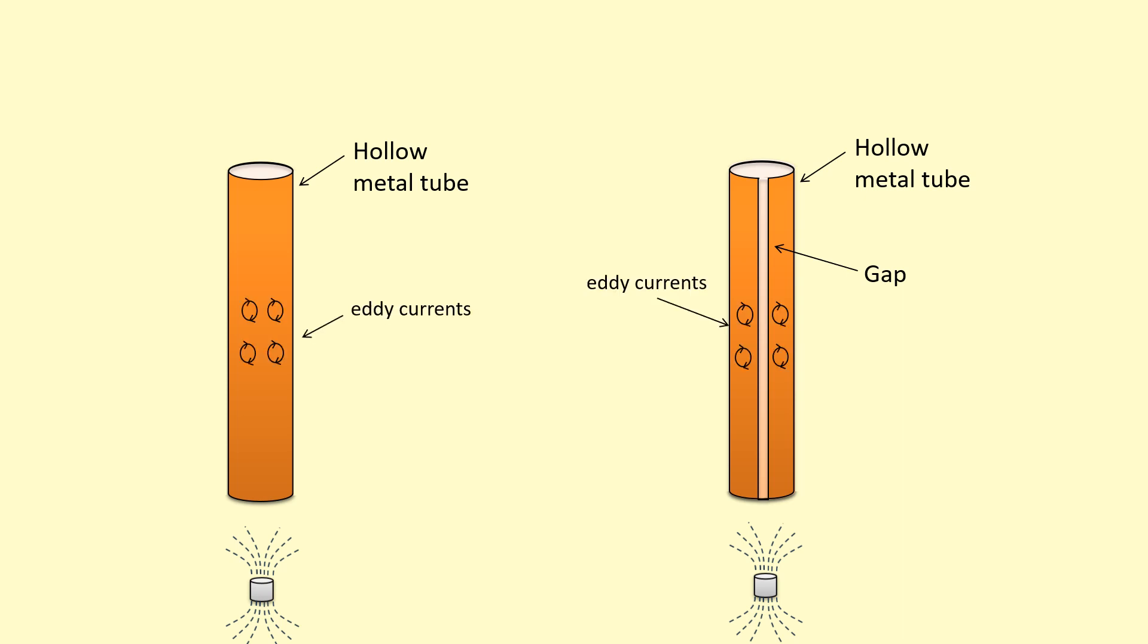Well, eddy currents are still formed in both of them. However, on the one on the left, these eddy currents can add up together to form very large, large eddy currents, while on the one on the right, they can't add up. So because the one on the left can form large eddy currents, it's going to produce a stronger magnetic field and that's going to exert a large upward force, preventing the acceleration of the magnet on the left, while the one on the right, it can accelerate to a higher speed. And so it's going to hit the ground first.